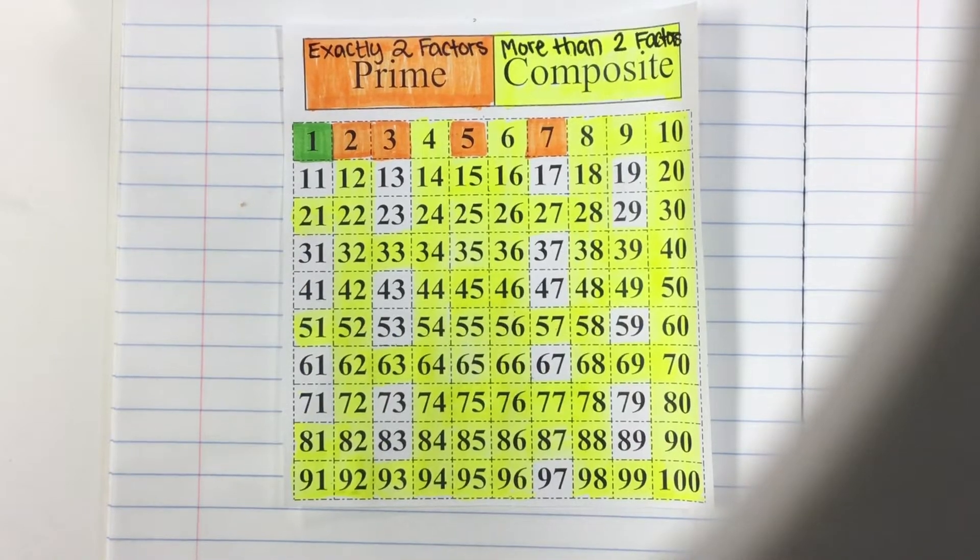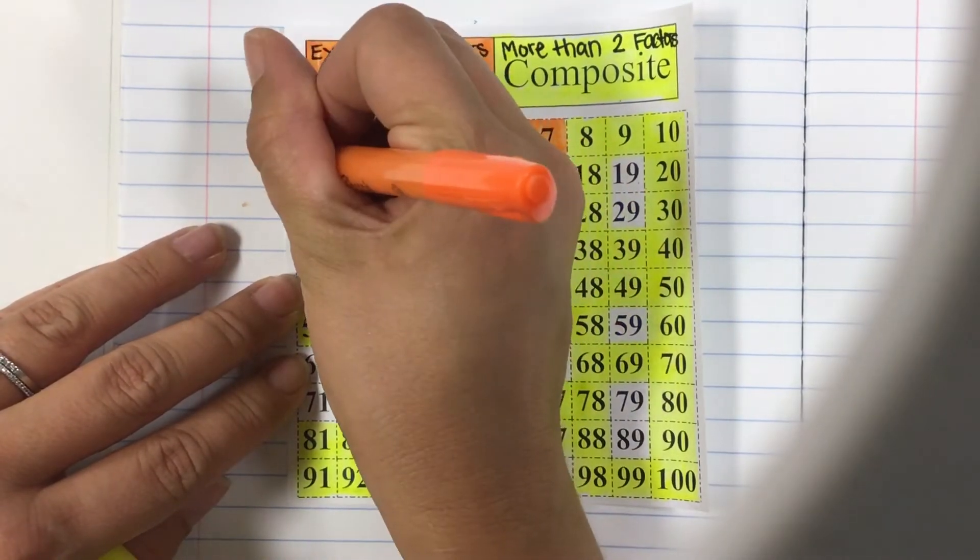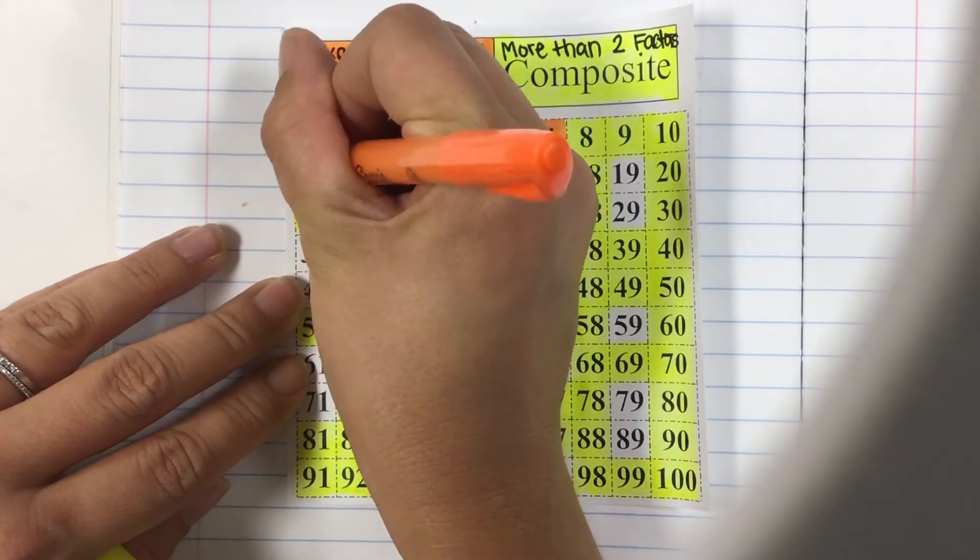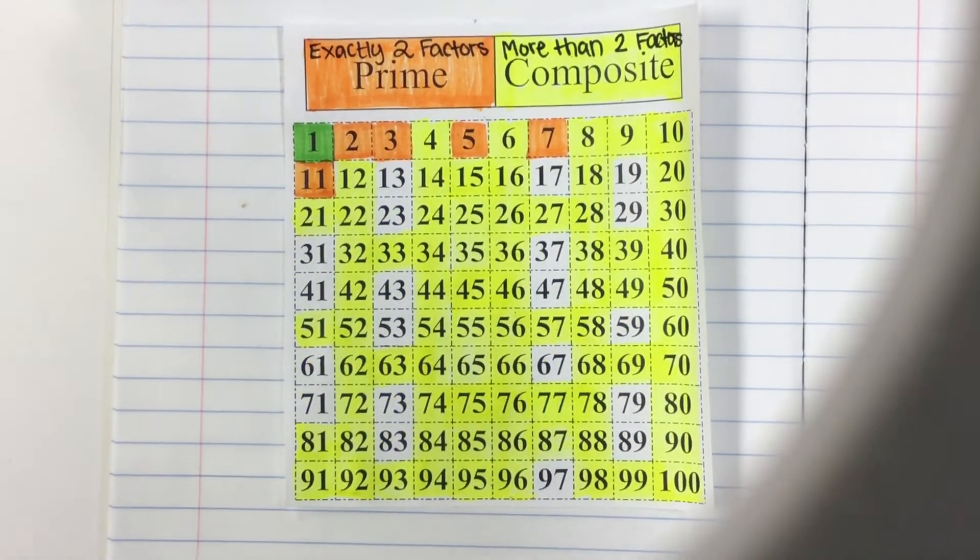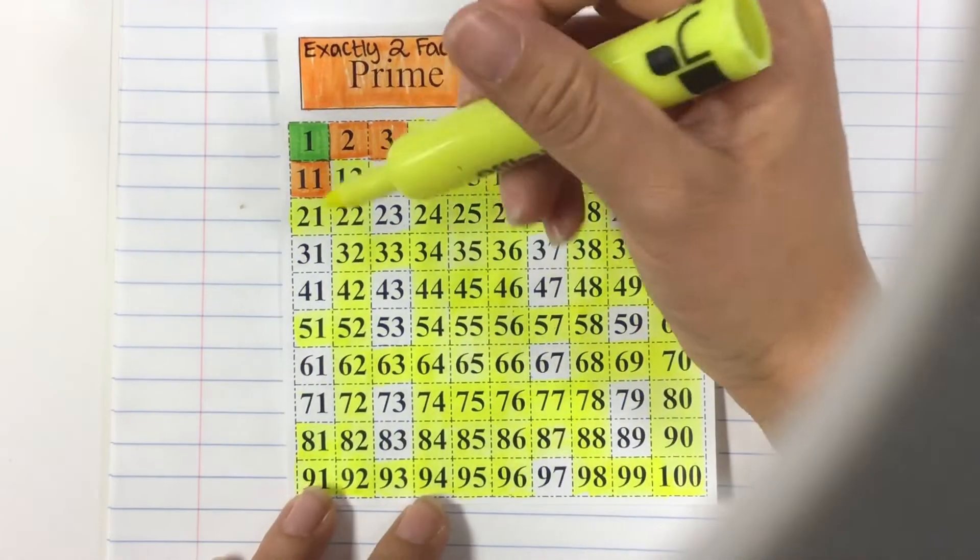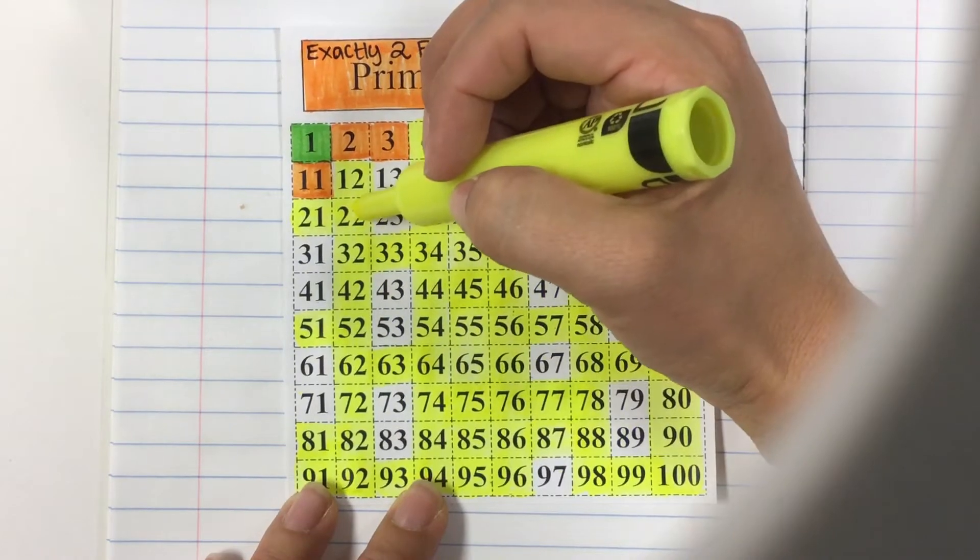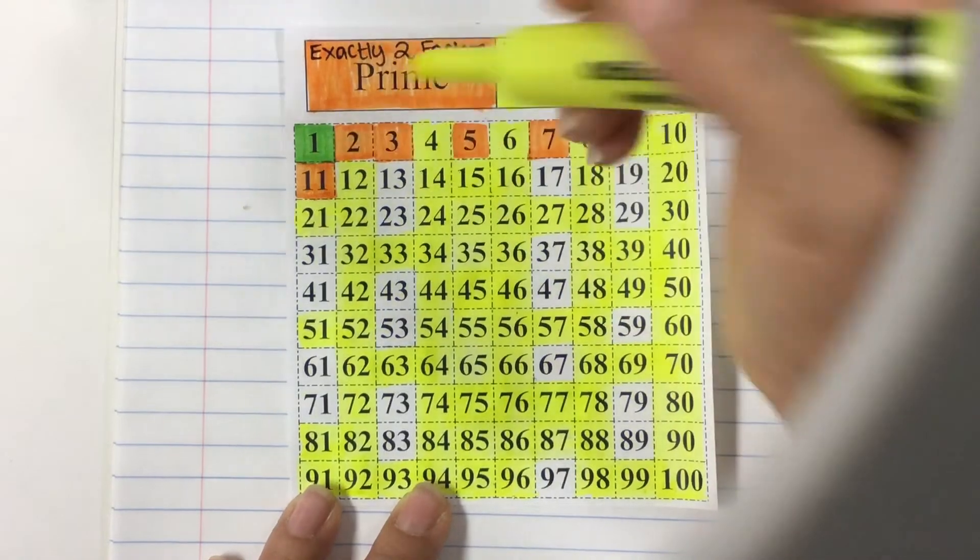The last thing we need to do is check our next prime number. Our next prime number is 11 and let's just double check that every number for 11 is already highlighted. If you know the trick for 11 it's that it's all the doubles: 11, 22 is a multiple of 11, 33, 44, 55, 66, 77, 88, 99. So those are done.